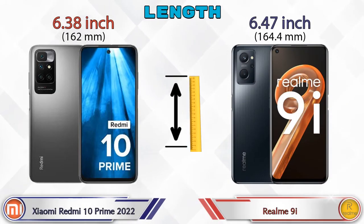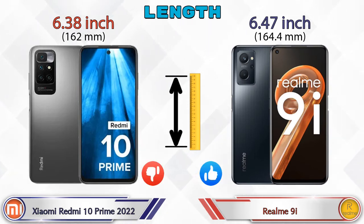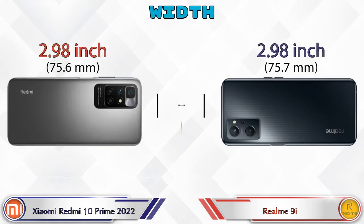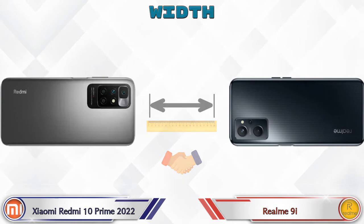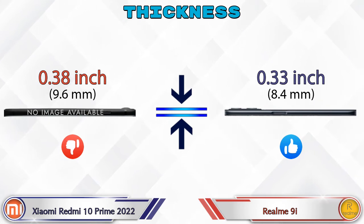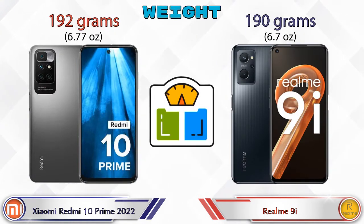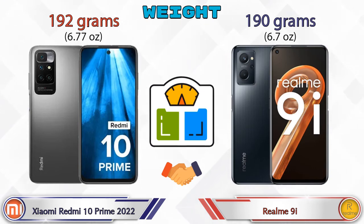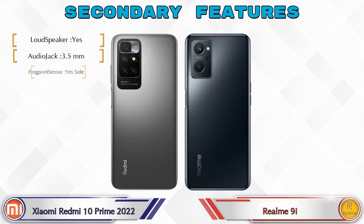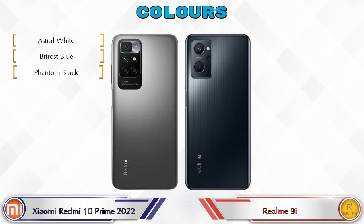For length, the Redmi 10 Prime 2022 is 6.38 inches and the Realme 9i is 6.47 inches. Width is the same on both at 2.98 inches. For thickness, the Redmi 10 Prime 2022 is 0.38 inches and the Realme 9i is 0.33 inches. Weight is very similar: 192 grams for the Redmi 10 Prime 2022 and 190 grams for the Realme 9i.